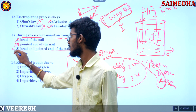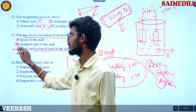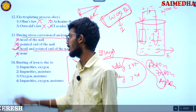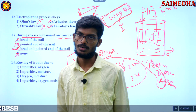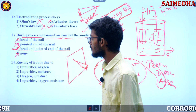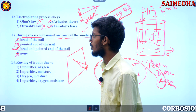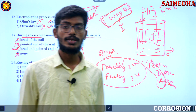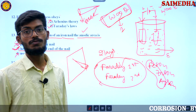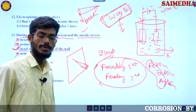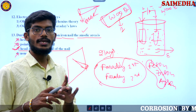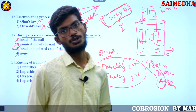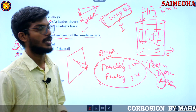Both ends will definitely undergo corrosion. During stress corrosion of an iron nail, both the head and the pointed end are anodic areas. 'None' is not the answer. Both ends undergo corrosion — this is a very important point.